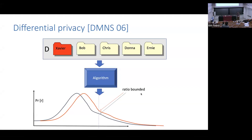You might think: why does this correspond to something we should call privacy? You're talking about bounding ratios of algorithm outputs. Imagine there was a particular object output and published as a result of this analysis, and some adversary wanted to infer: did I observe this output because of Alice or because of Javier? Then information-theoretically, this adversary cannot make inferences about the differences between these two individuals' data, aside from the amount allowed by the ratio.